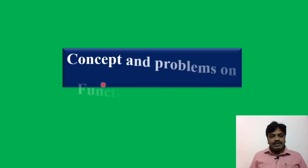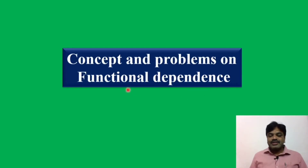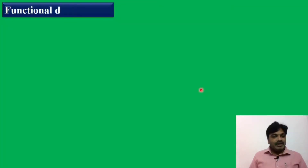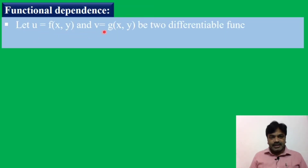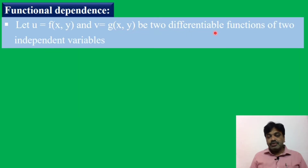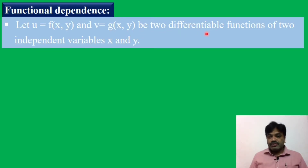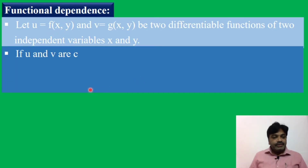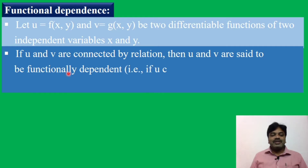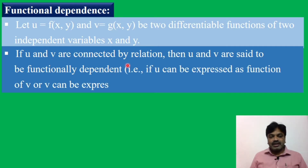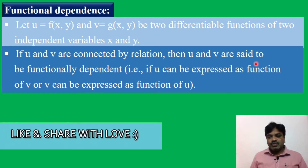Today we discuss the concept and problems on functional dependence. Let u equals f(x, y) and v equals g(x, y) be two differentiable functions of two independent variables x and y. If u and v are connected by a relation, then u and v are said to be functionally dependent.